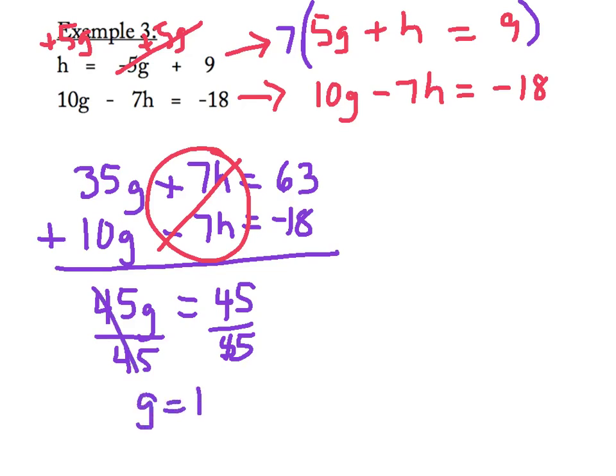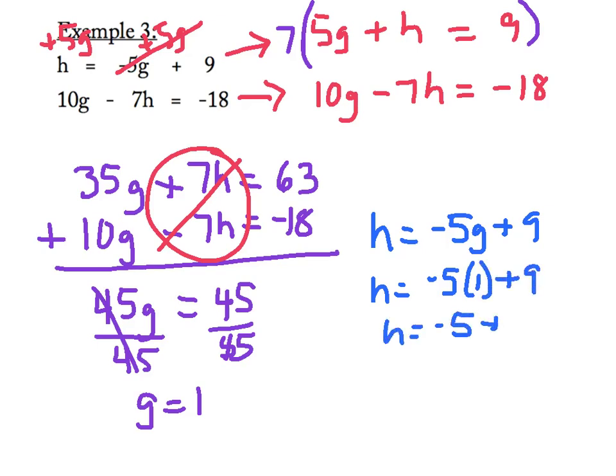Now that I know that G value, I'm going to take that and substitute it into one of my original equations. I like the first one, H is equal to negative 5G plus 9. When I substitute in my G value, I have H is equal to negative 5 times 1 plus 9. H equals negative 5 plus 9. H equals 4. My last step is to write my solution as an ordered pair in alphabetical order, which will be 1, 4.